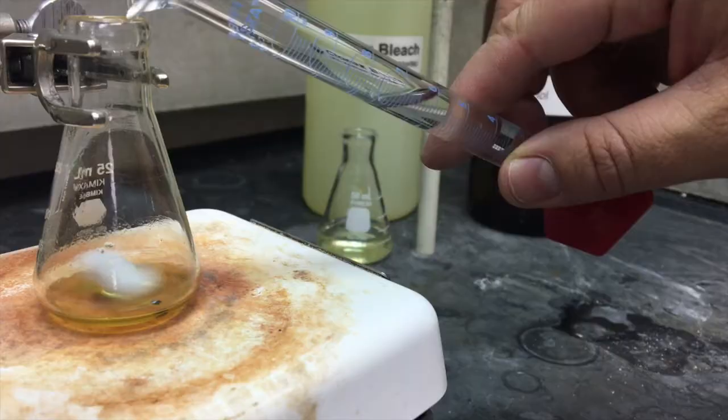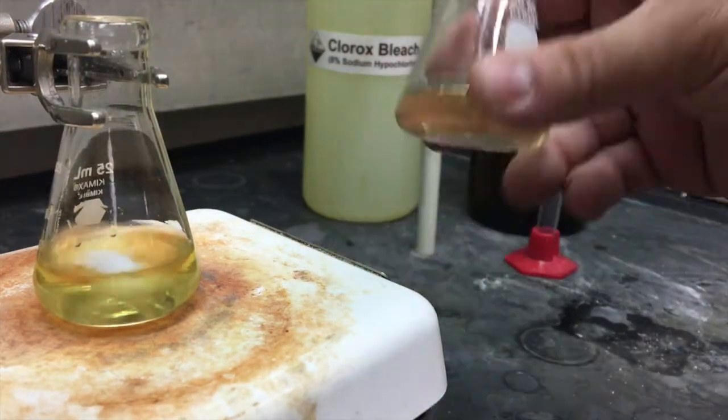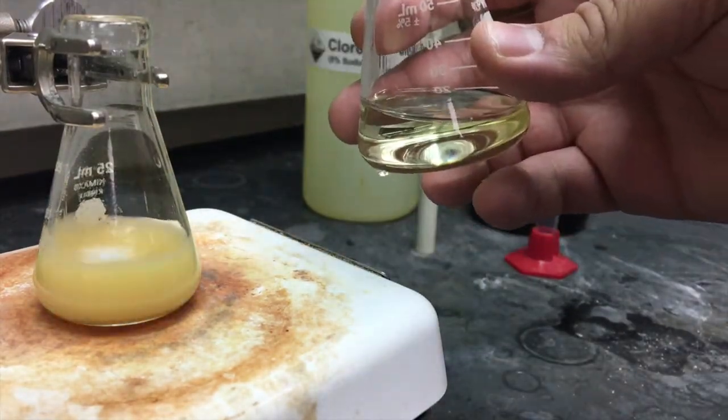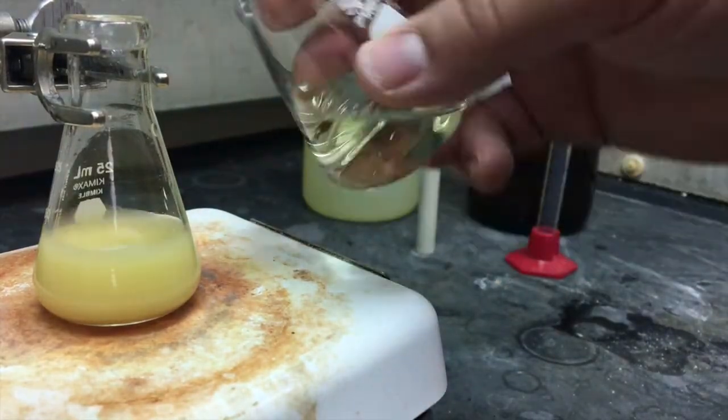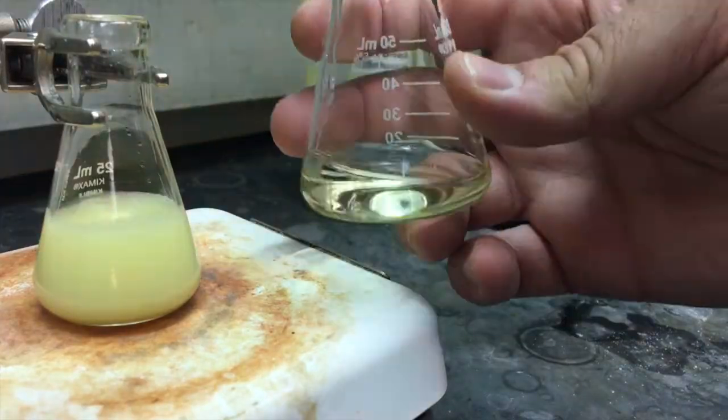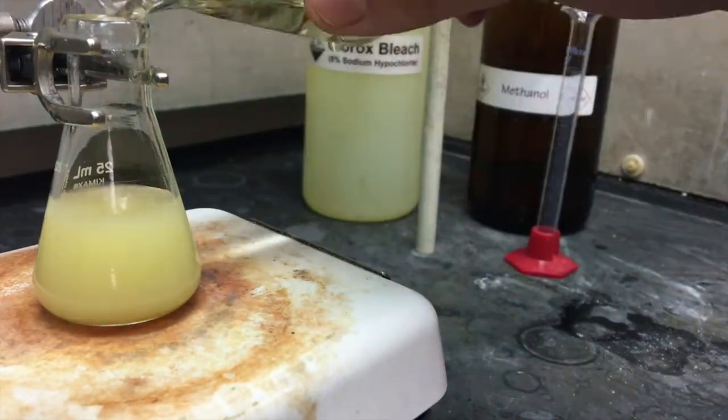Your solvents for this reaction are methanol and the water which is in the 8% sodium hypochlorite solution. Make sure you add the sodium hypochlorite in several small portions, and check to see if it's warming up. If the solution is warming up, cool it down in a water bath.